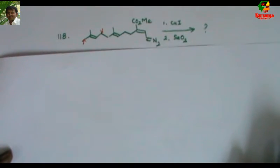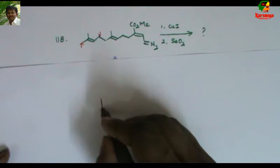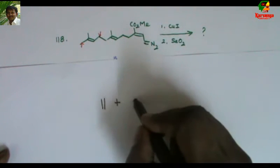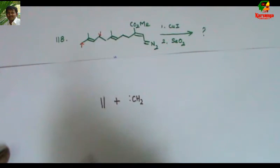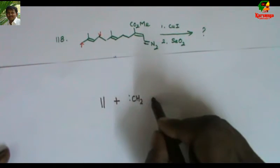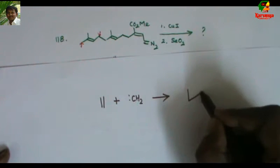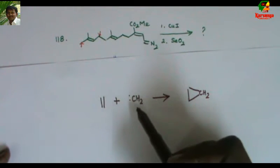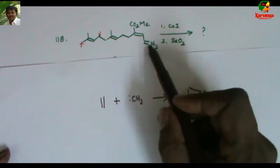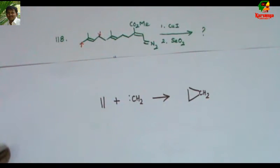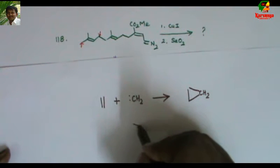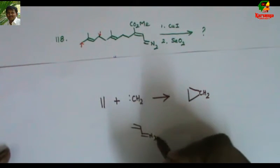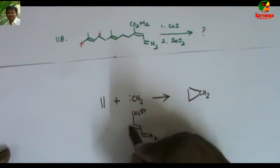First: cyclopropanation and its stereochemistry. The most common method to obtain cyclopropane is the reaction of alkene with carbene. Carbene reacts with alkene to give cyclopropane. In our problem it is not carbene, it is metal carbenoid. That is the diazo compound.